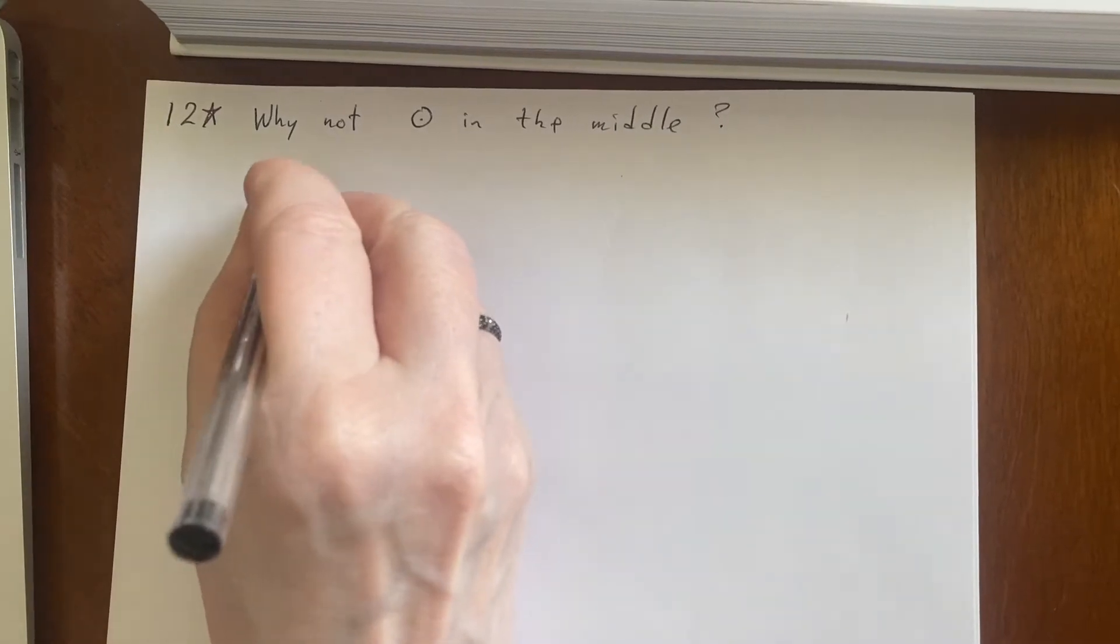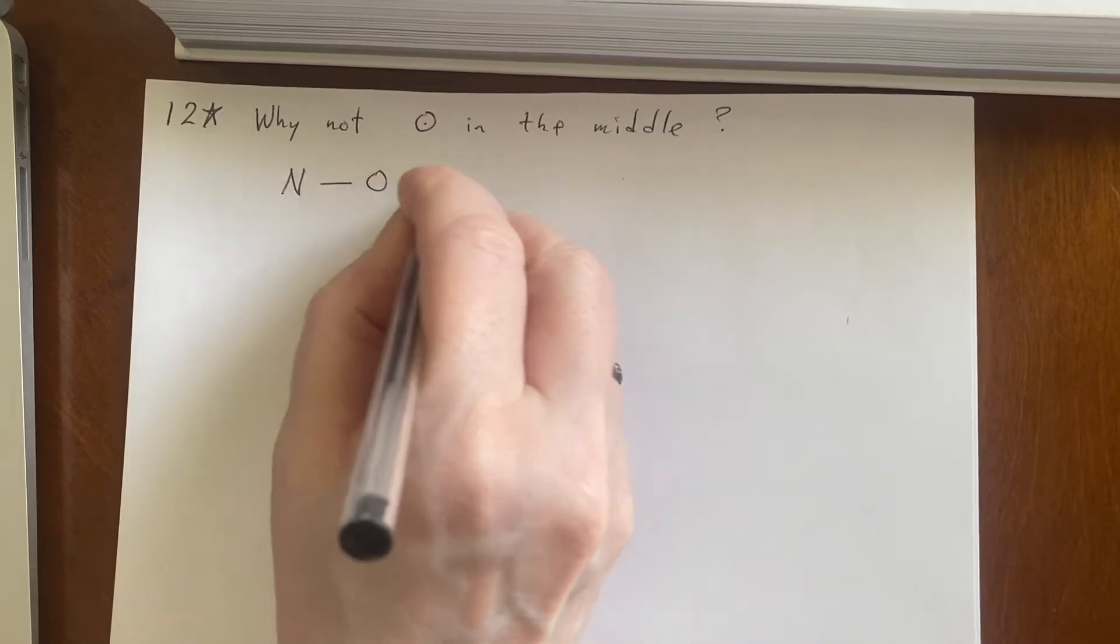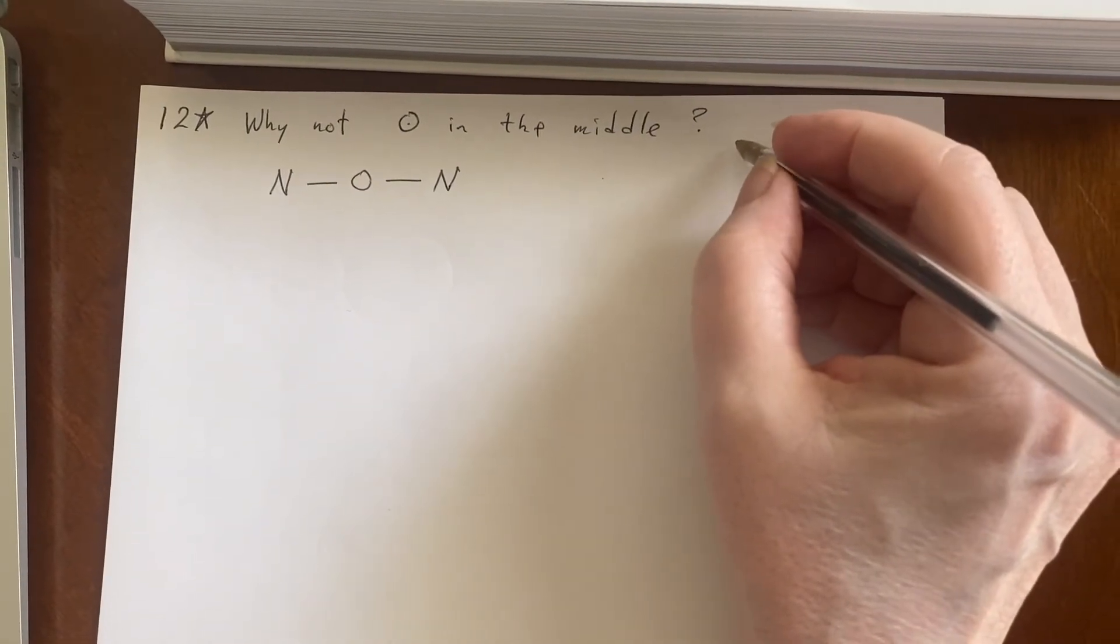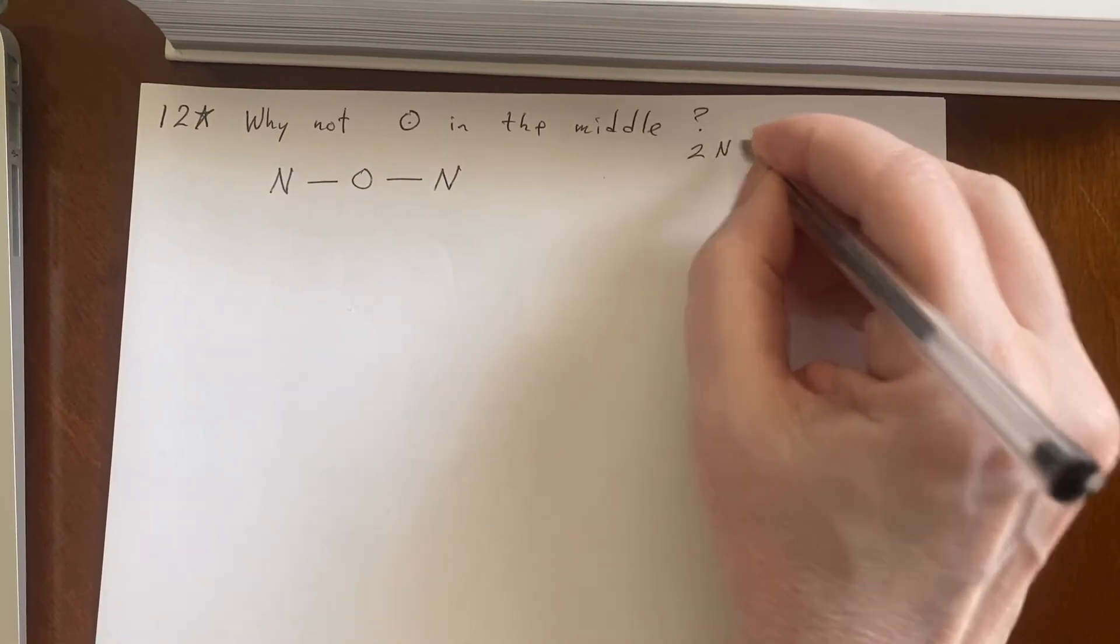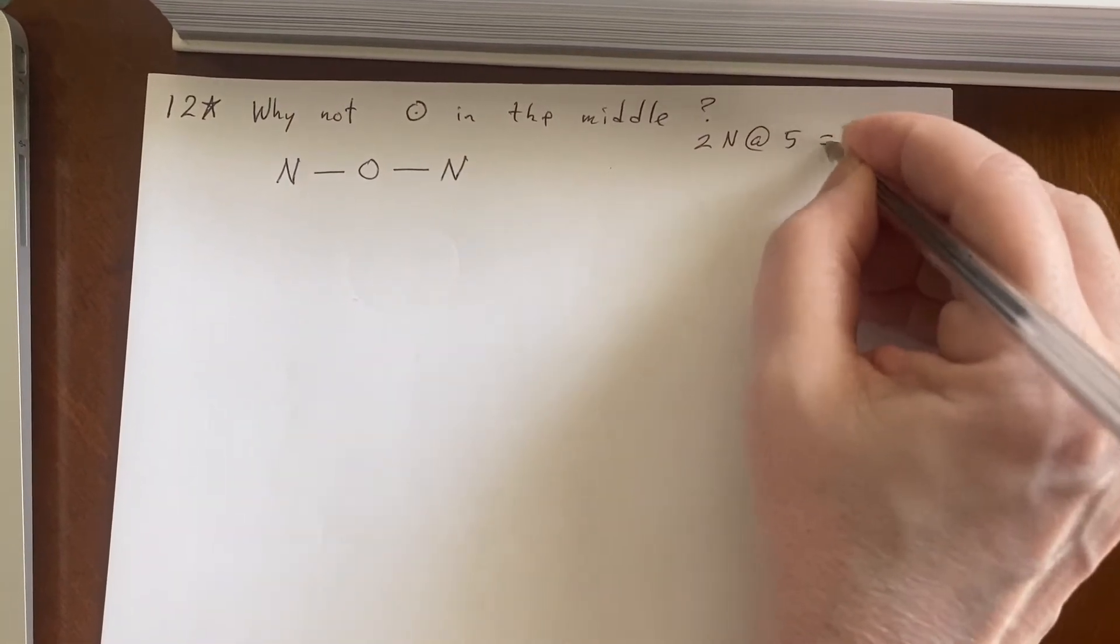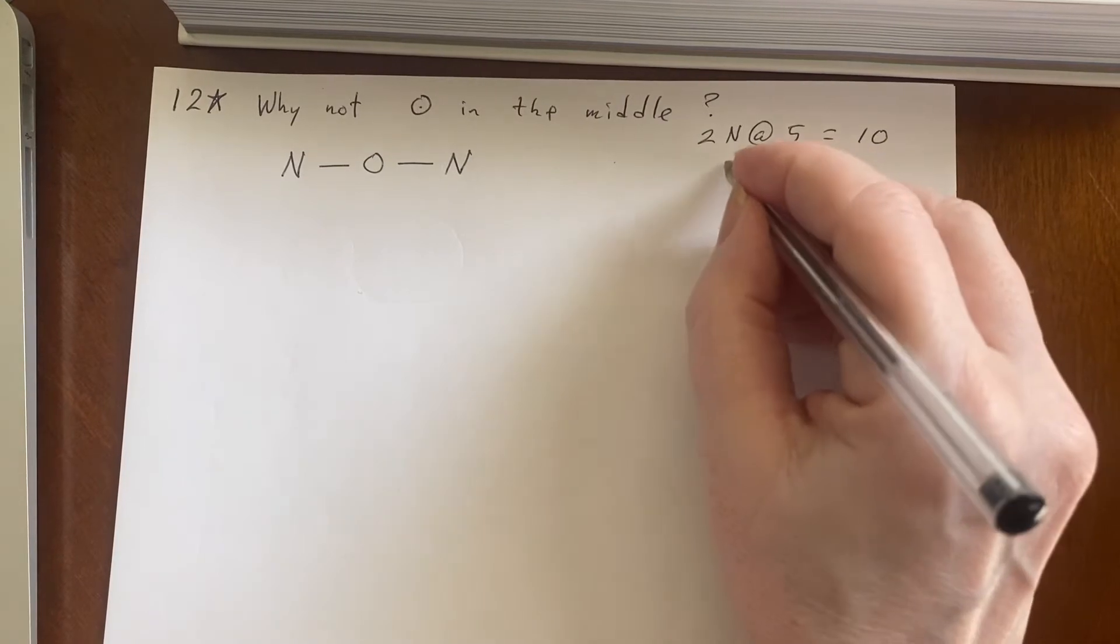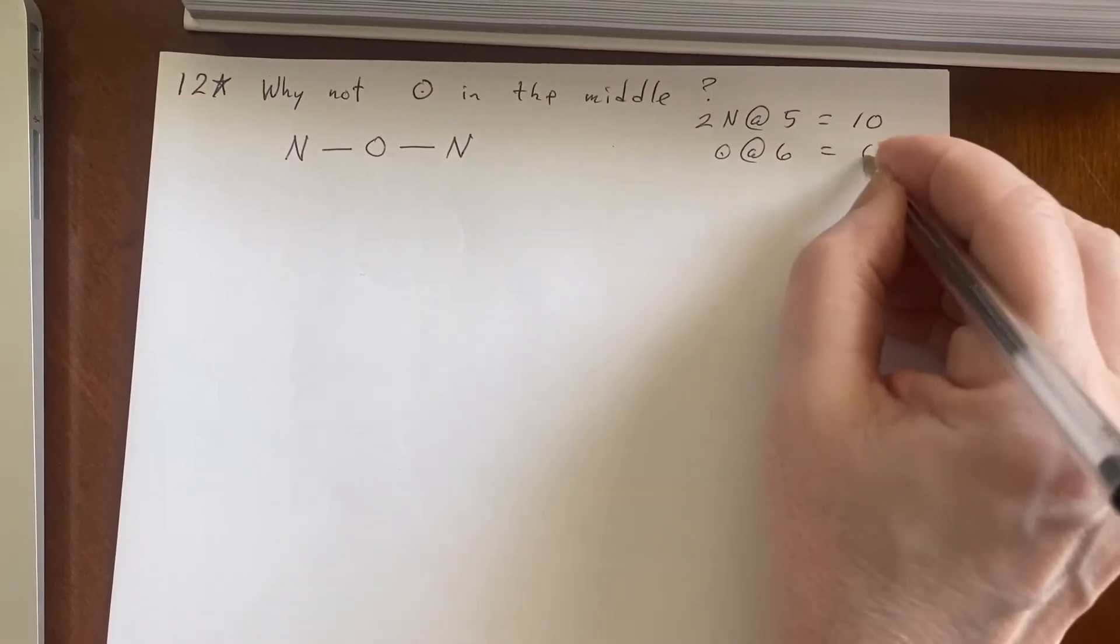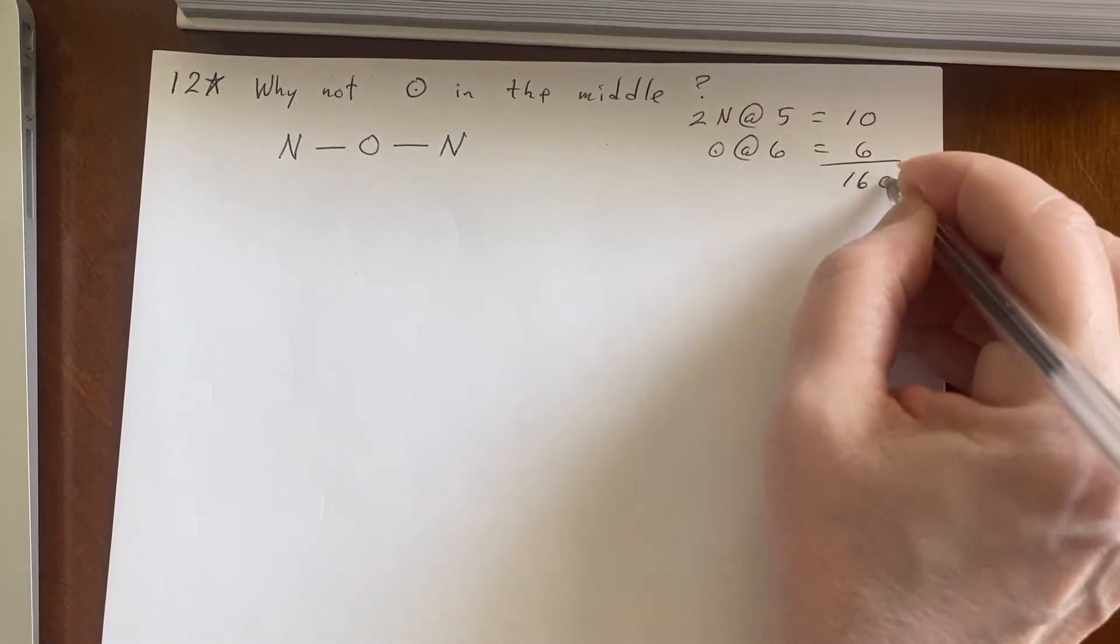Okay, well, if it's going to be in the middle, we know we've got this to start with. We'd better do a little count, because that's what we always need to do. Two Nitrogens that bring in five, that would be 10 electrons, and an Oxygen that brings in six. So I have 16 electrons to work with.